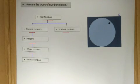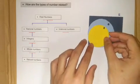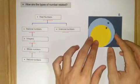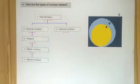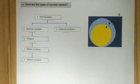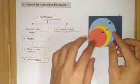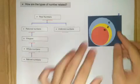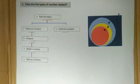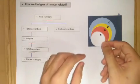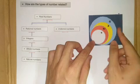For some rational numbers they can be classified as integers. And for some integers we can classify them as whole numbers. Furthermore, for some whole numbers we can classify them as natural numbers, denoted with capital N.